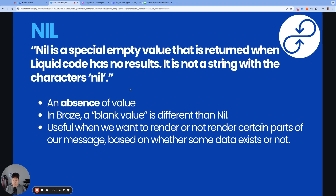Let's wrap up with one more quick bonus data type, which is nil. Nil is a special empty value that is returned when Liquid code has no results. It is not a string with the characters nil. In the context of Braze Liquid, nil is actually different from a blank value — nil is an absence of value. Nil is useful when we want to render or not render certain parts of a message based on whether some data exists or not.